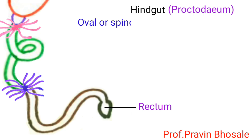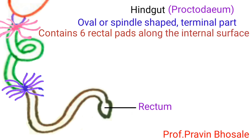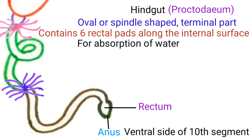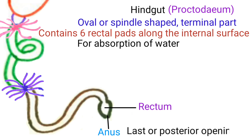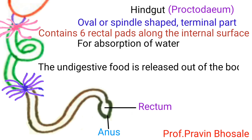The colon directs waste material towards the rectum and reabsorbs water from waste as per need. Rectum is an oval or spindle-shaped terminal part of the hindgut. It contains six rectal pads along the internal surface for absorption of water. The rectum opens into the anus, which is present on the ventral side of the tenth segment. The anus is the last posterior opening of the digestive system through which undigested food is released out of the body.